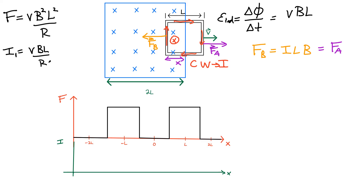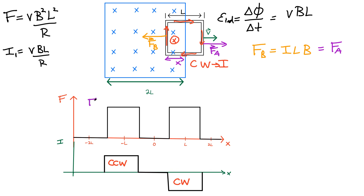For our current plot: when you first enter the field region you obtain a counterclockwise current — we'll call that positive. There is no current when the loop is completely inside the field region because there's no change in flux. When leaving the field region, a clockwise current is induced in the opposite direction. The applied force we calculated always has to oppose the magnetic force because the loop needs to be kept at constant velocity. Once you're inducing a current, you have to keep applying that force throughout the entire motion.